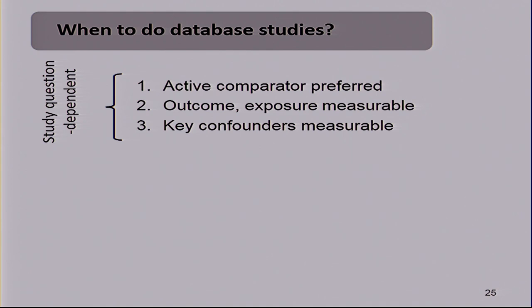Number two: outcome and exposure must be measurable. That's usually the kiss of death for many of these adventures because the outcome is just not observed in the data. Think about functional status, cognitive status, pain — all these important characteristics for patients. They're not recorded in claims data, and I would argue they're not in EHR data either. I look at the EHR data of my rheumatology colleagues and what I see is 'looks good, come back in four months.' I don't see a DAS score or HAQ score — unless it's within a registry, which is different.